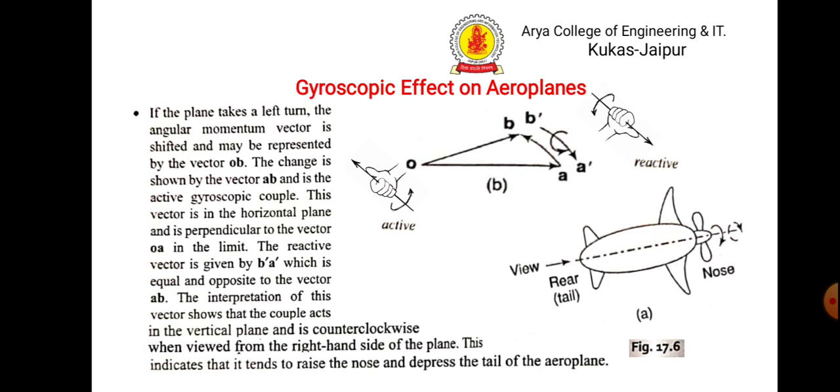So, it will be in the anticlockwise direction. The curl of the finger indicates that the front side will be upward and the rear side will be downward. Hence, the effect is the nose will be raised while the tail will be deep.